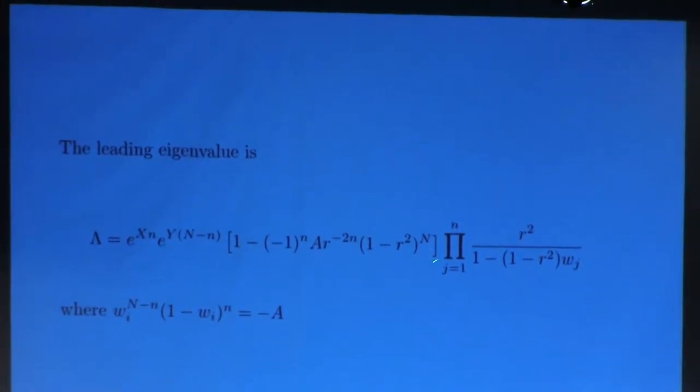Here's the w's. These are all just constants. Ignore those. But the eigenvalue is just some very simple function of the roots. It's a product of 1 minus 1 minus r squared times w.